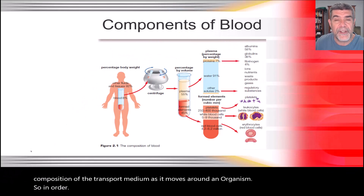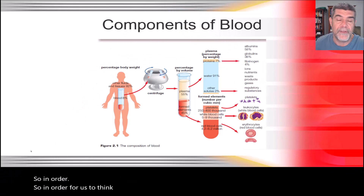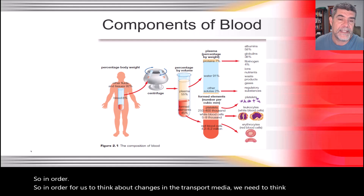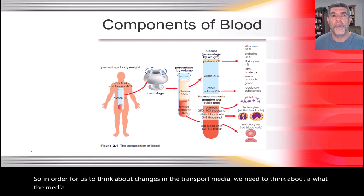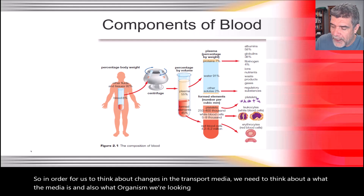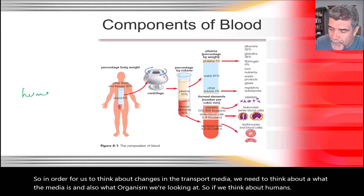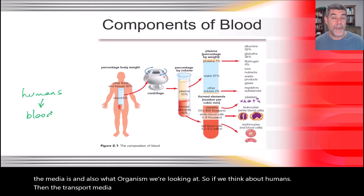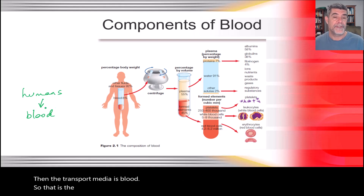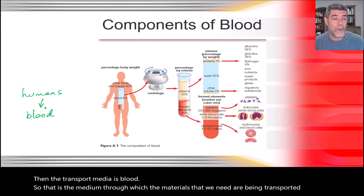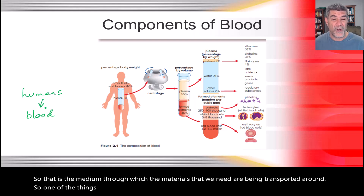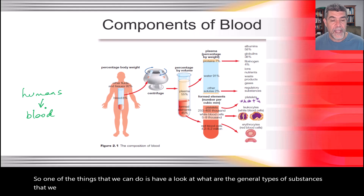In order to think about changes in the transport media, we need to think about what the media is and also what organism we're looking at. If we think about humans, the transport media is blood — that is the medium through which the materials that we need are being transported around. One of the things we can do is look at the general types of substances we might find in there.